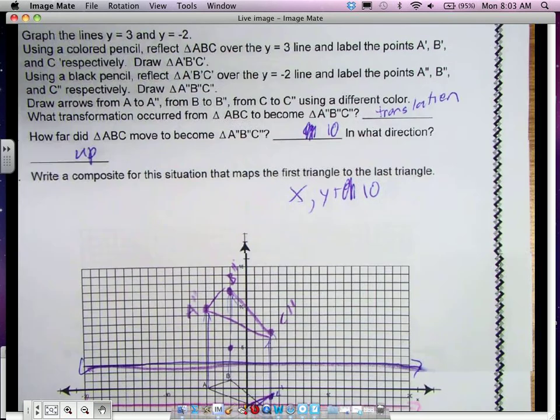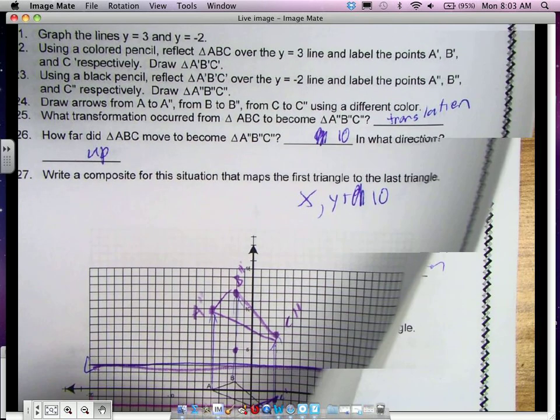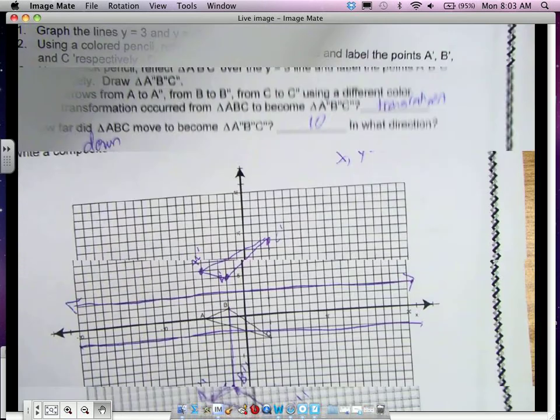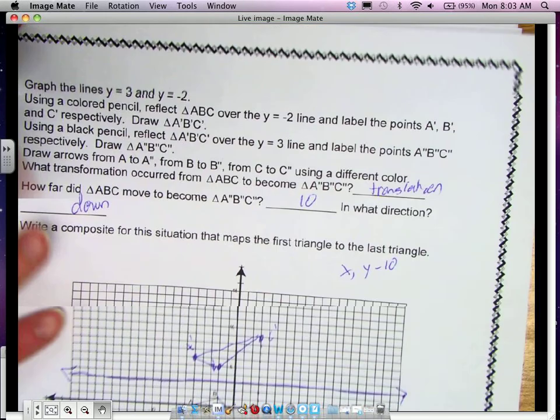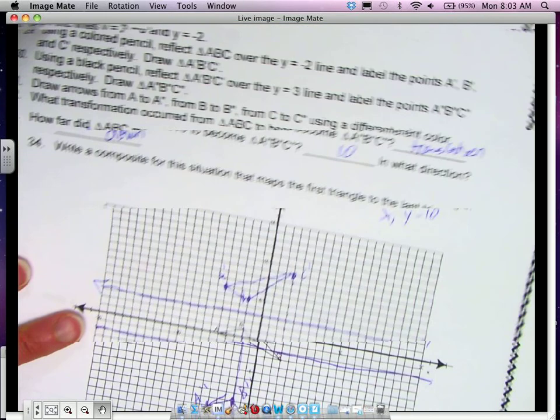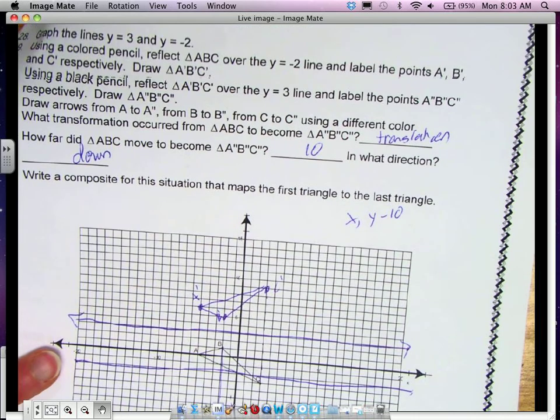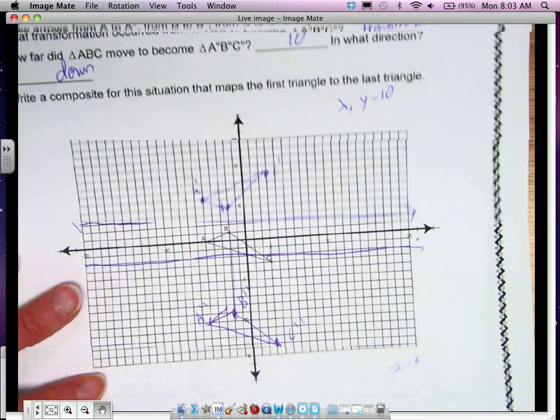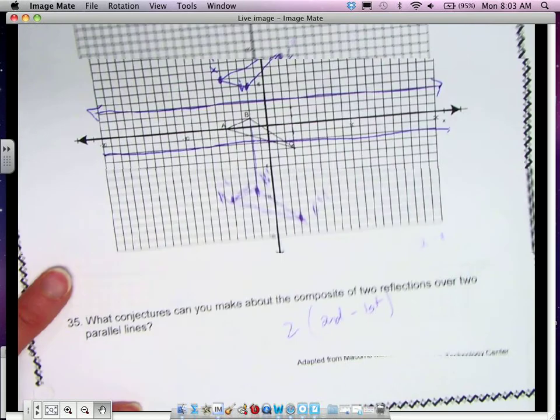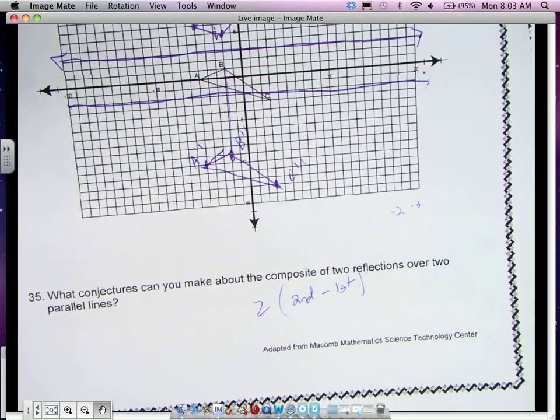The next one, we got translation 10 units down when we reflected it over first negative 2, then 3. And we got the same equation. It is the second minus the first times 2.